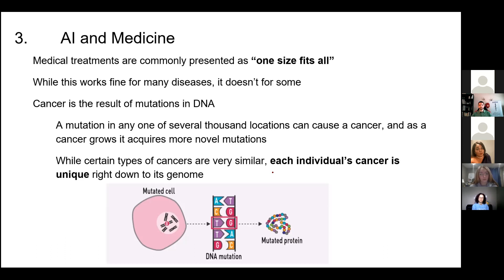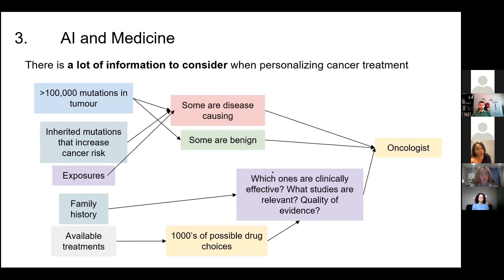The way we approach cancer needs to take into account the precise details of the individual. An oncologist dealing with a cancer patient faces hundreds of thousands of mutations, inherited mutations, exposures, complicated family histories, and thousands of different available treatments. Which mutations cause the cancer? What are the available drugs? Has anyone tried this drug with this specific cancer? Which ones are effective? It's simply not physically possible for one person or even a small group to take all of this into consideration. But at each one of these steps, we can leverage an AI to make things easier.